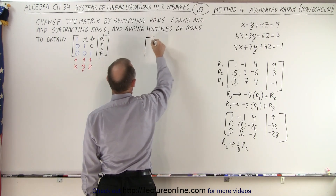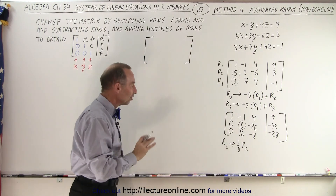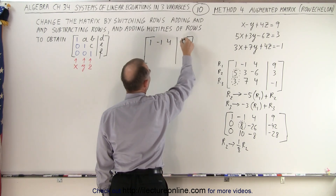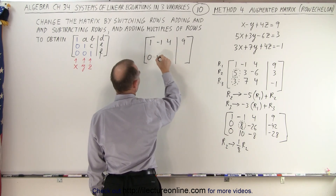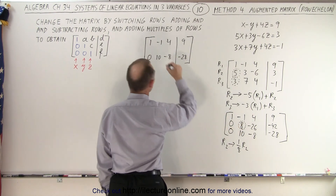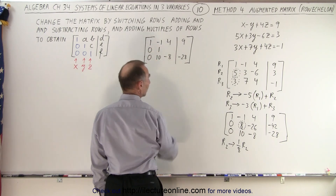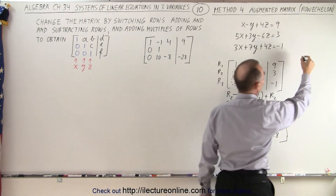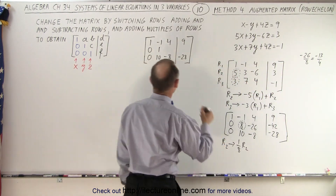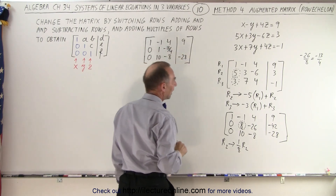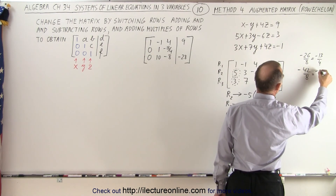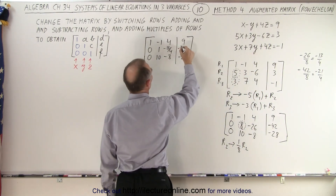Since I'm only changing Row 2, Row 1 stays the same: 1, -1, 4, 9. Row 3 stays the same: 0, 10, -8, -28. Row 2 becomes: 0 divided by 8 is 0; 8 divided by 8 is 1; -26 divided by 8 simplifies to -13/4; and -42 divided by 8 simplifies to -21/4. So Row 2 is now 0, 1, -13/4, -21/4.